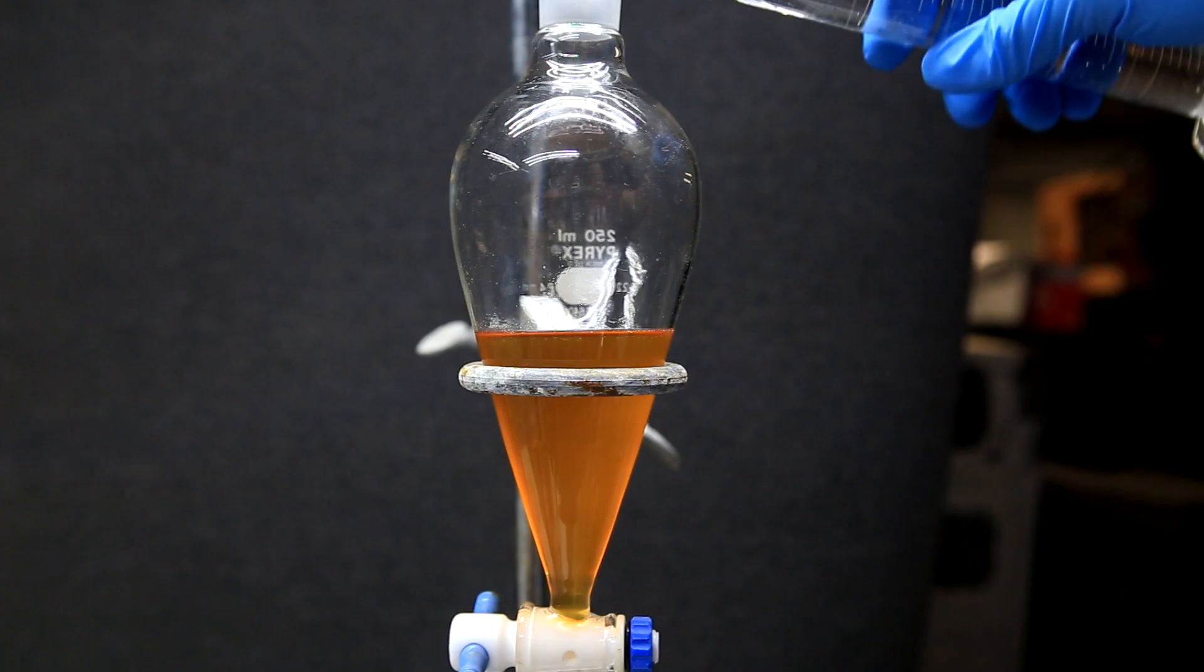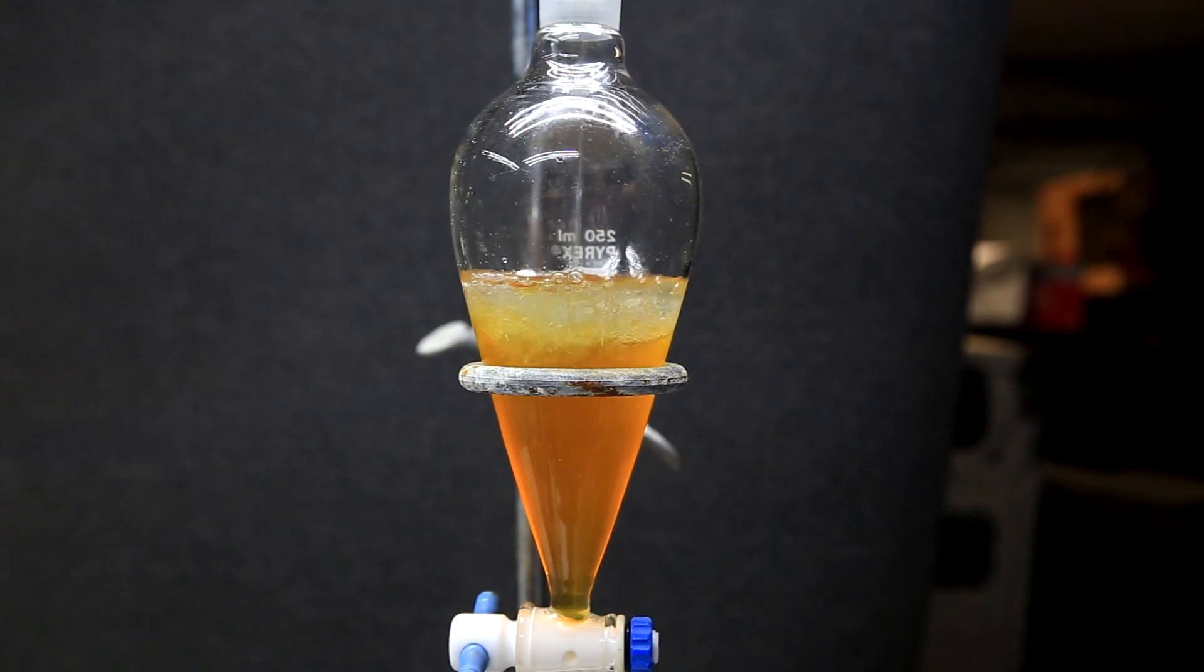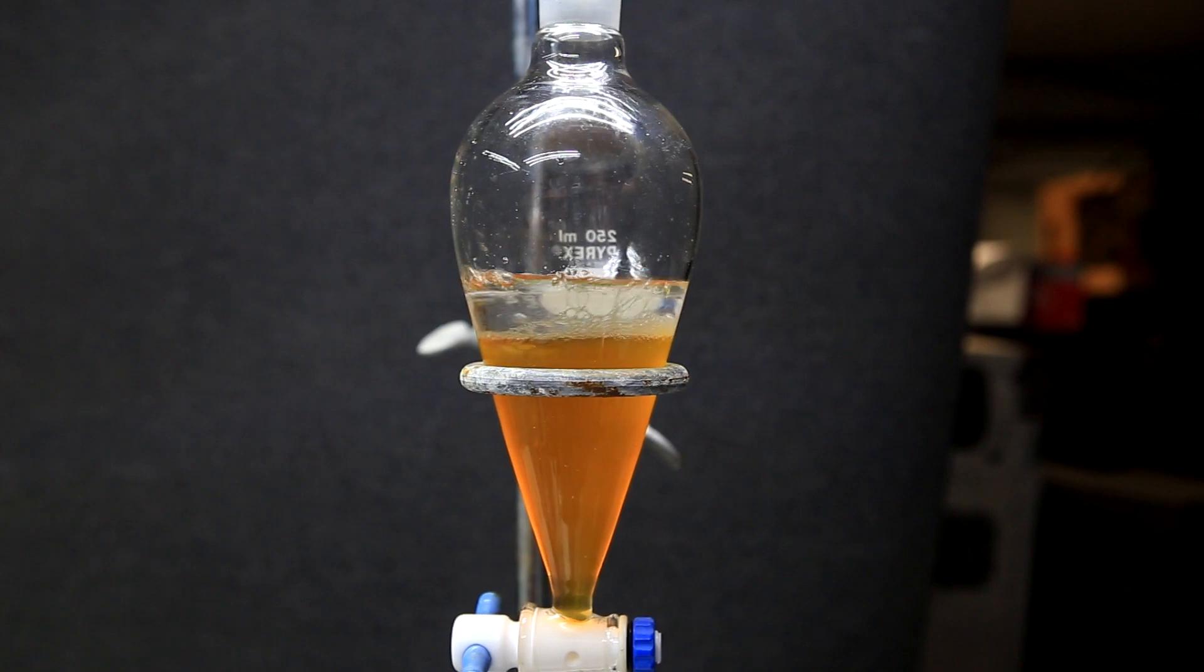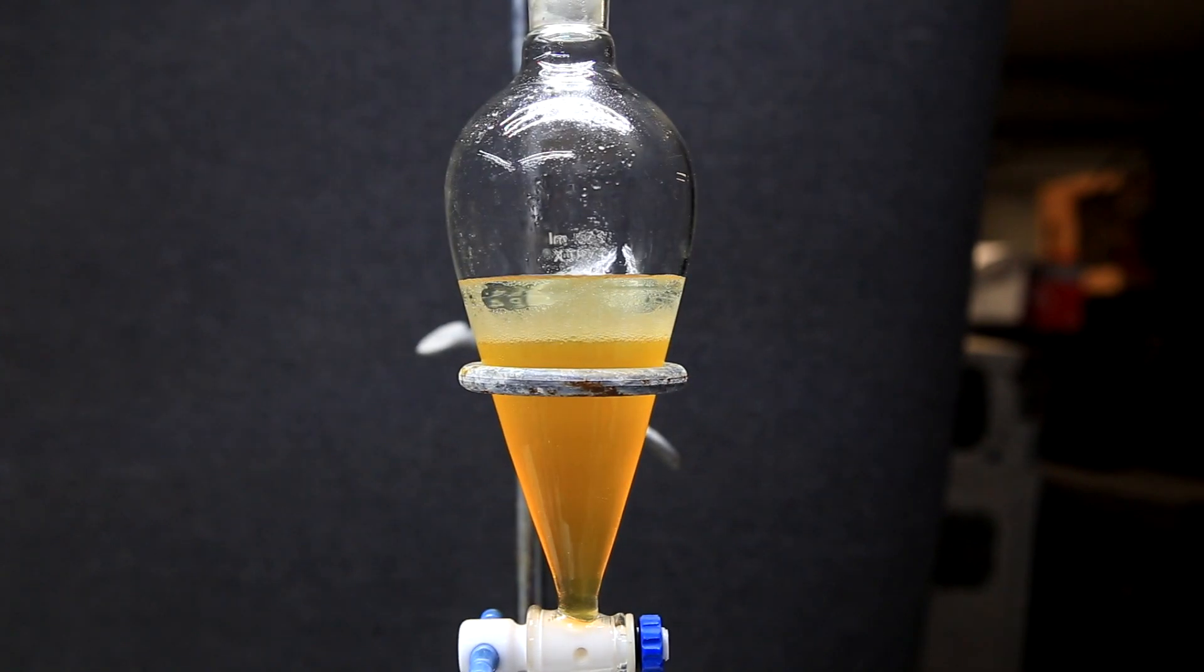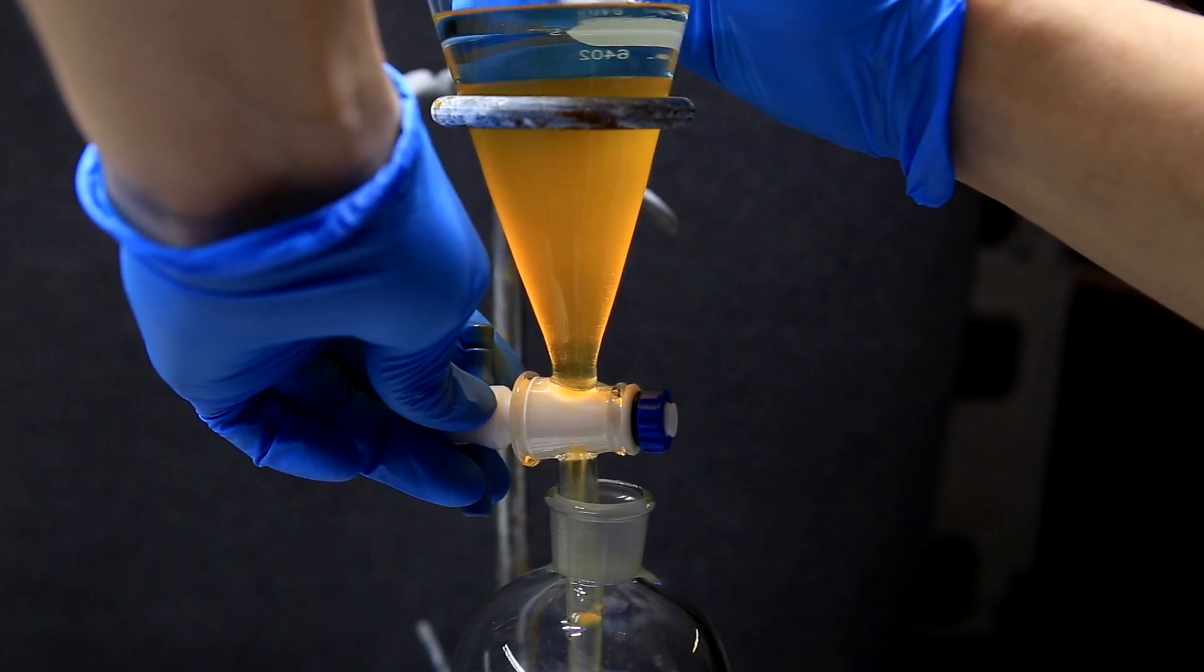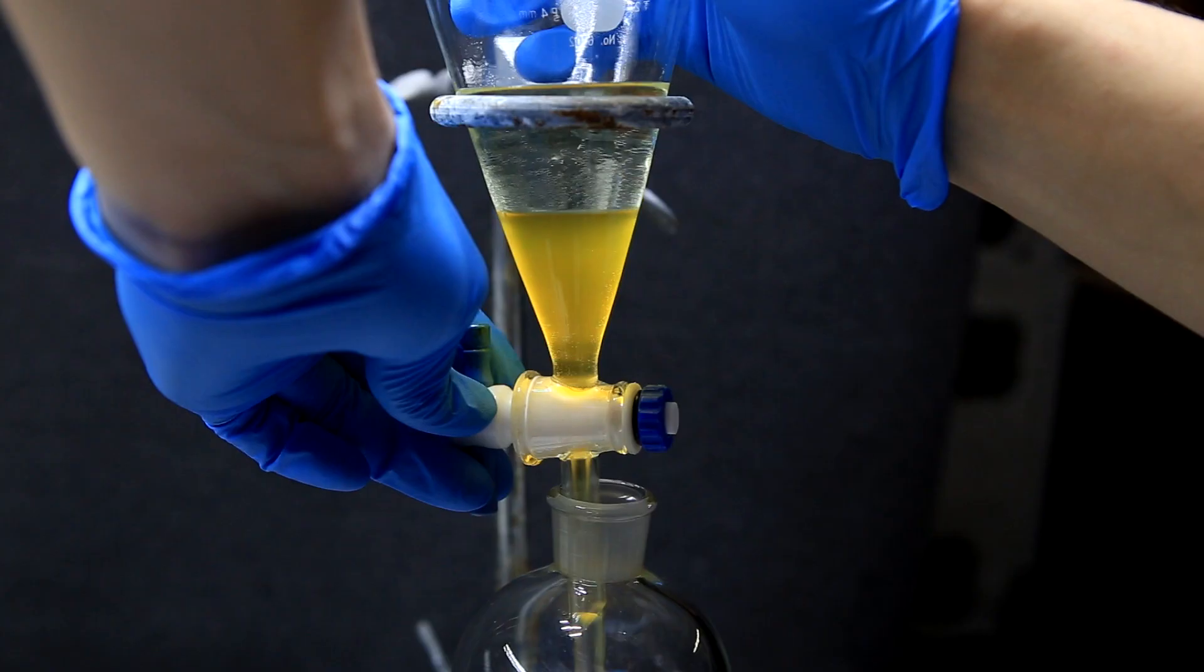So now we have our isolated dichloromethane extract, and to further purify it of any p-TSA, we add some saturated bicarbonate solution. I don't show it here, but in each washing step, the separatory funnel was thoroughly shaken and vented. The layers are allowed to settle, and the bottom DCM layer is again drained directly into another separatory funnel.